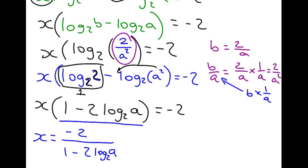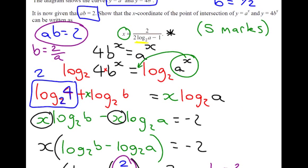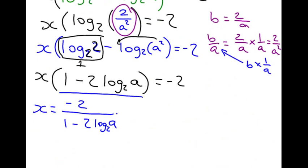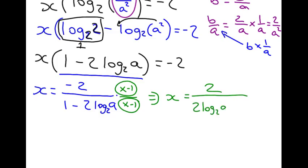Now, if you look at this and compare it to our answer we're aiming for, we don't have a minus here. If we had a minus here, we would need a minus here and a plus here, which is what we've got. So, effectively, all we're going to do now is multiply top and bottom of the equation by minus 1. So, x equals 2 over 2 log to base 2 of A minus 1, which is what we were aiming for. So, we have got our five marks.